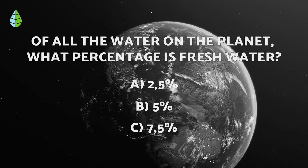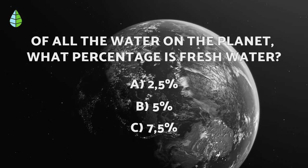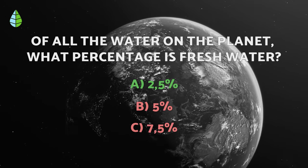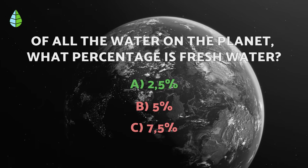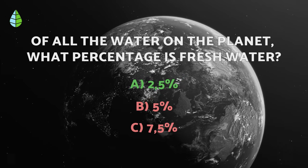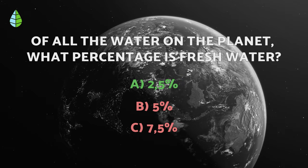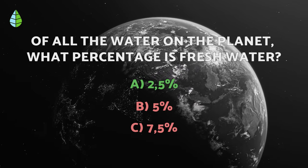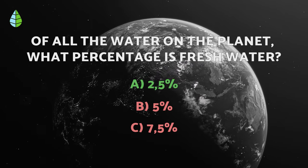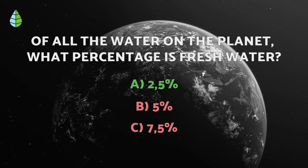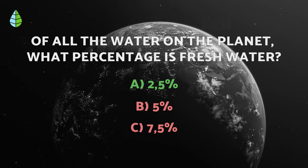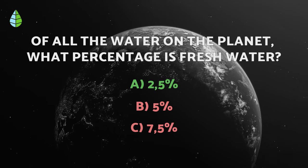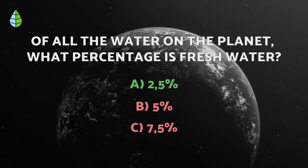Going back to the question we asked earlier — the correct answer is A. It is estimated that freshwater is only 2.5% of the total water on the planet; the remaining 97.5% is salt water. In addition, of this small percentage of freshwater, around 1% is estimated to be drinking water for us.